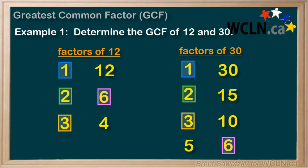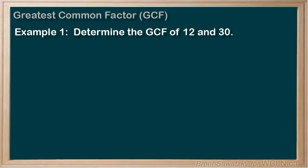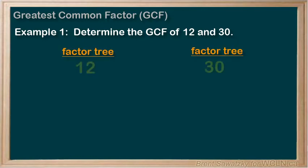We also call it the GCF, for greatest common factor. So this is a fairly simple concept. Sometimes, with bigger numbers which have a large number of factors, this method of finding the greatest common factor is a bit challenging. So let's look at another idea. Another way to determine the GCF between two numbers is to use factor trees. Let's use our same example to show this method.